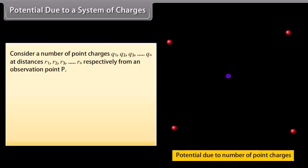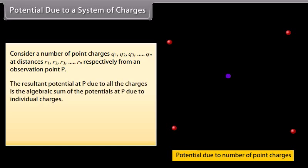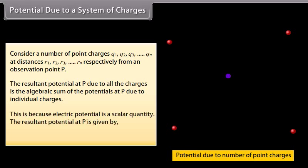Potential due to a system of charges. Consider point charges Q1, Q2, Q3, and so on till Qn at distances R1, R2, R3, and so on till Rn respectively from a point of observation P. The resultant potential at P due to all the charges is the algebraic sum of the potentials at P due to individual charges. This is because electric potential is a scalar quantity. The resultant potential at P is given by V equals V1 plus V2 plus V3 and so on till Vn.